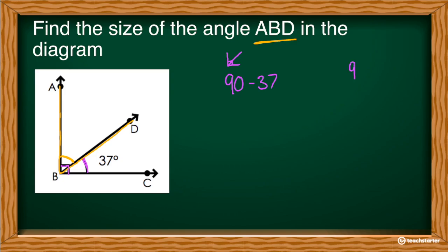If you need to go like this, that is perfectly fine. We can do it like that. 10 take 7 is 3. 8 take 3 is 5. So I've got 53 left. So I can say angle ABD equals 53 degrees.